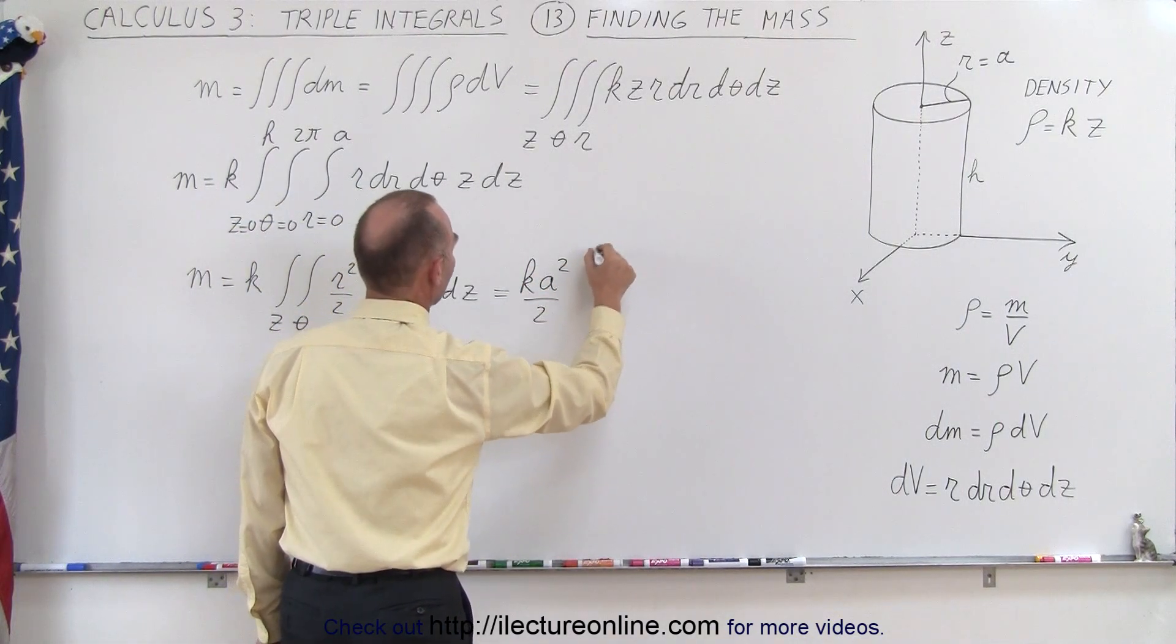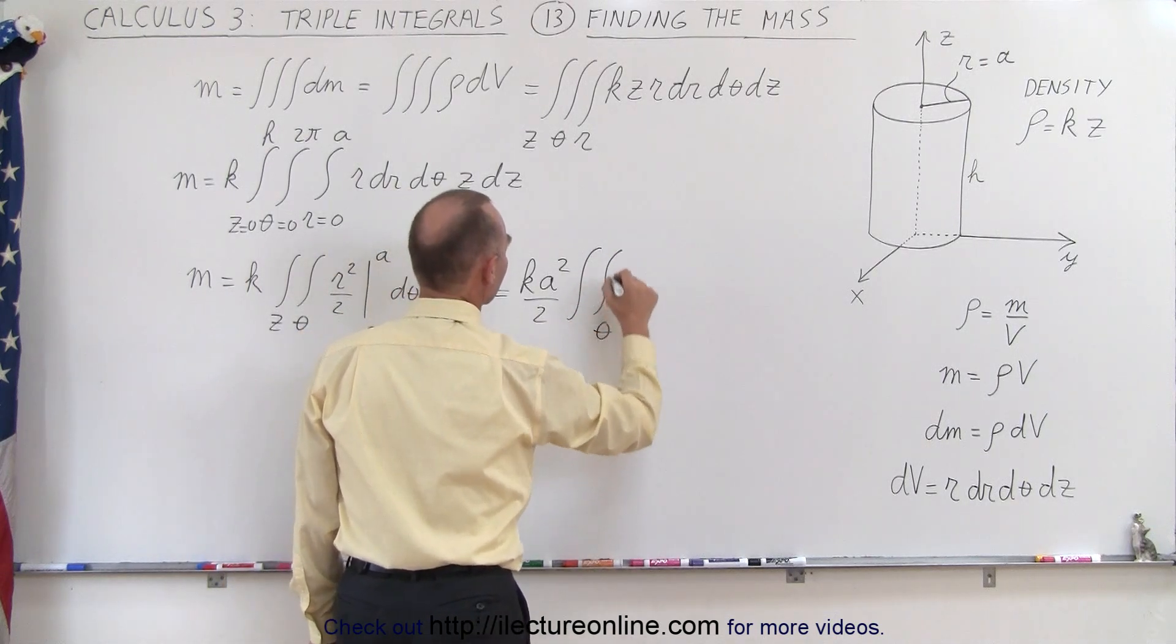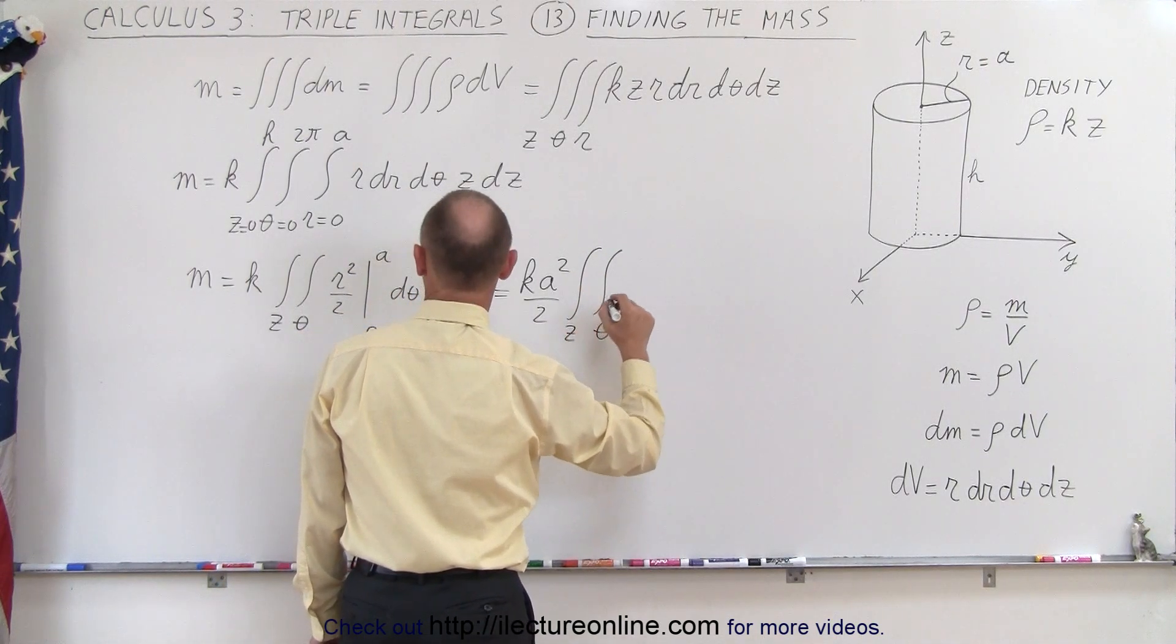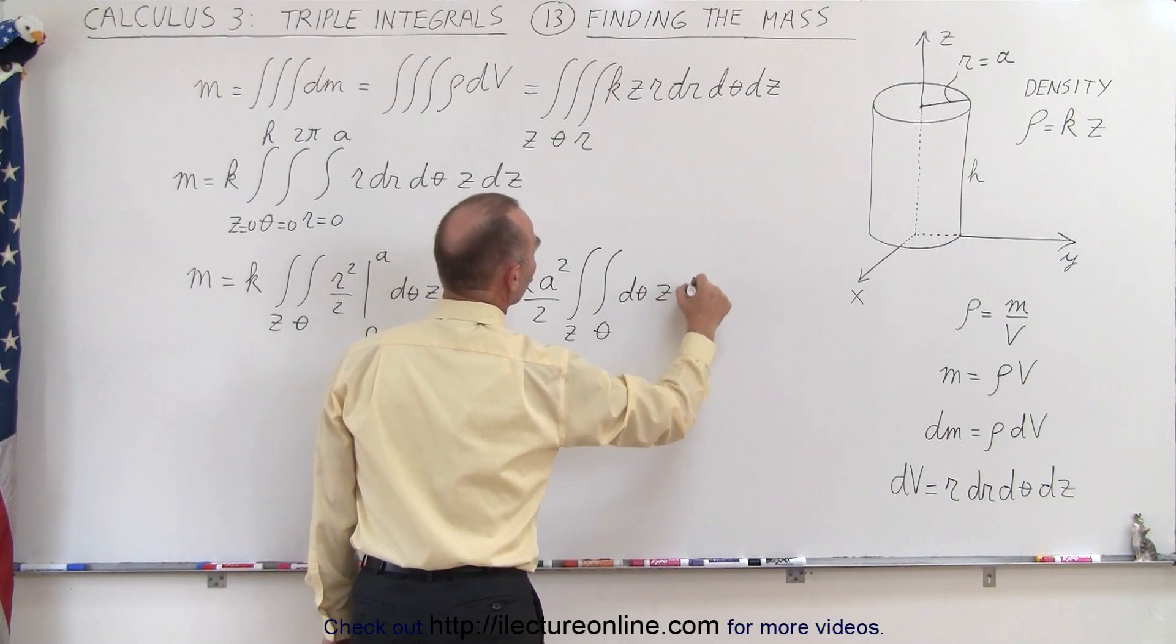And then we have the double integral left, one for θ and one for z, so we have dθ and z dz.